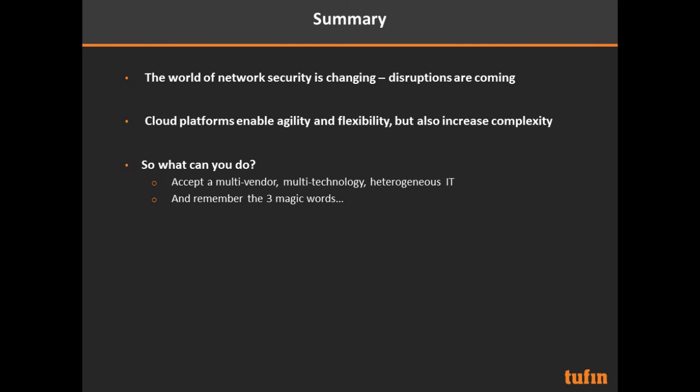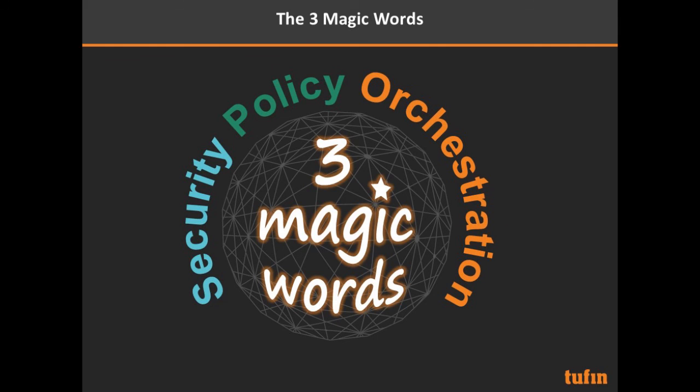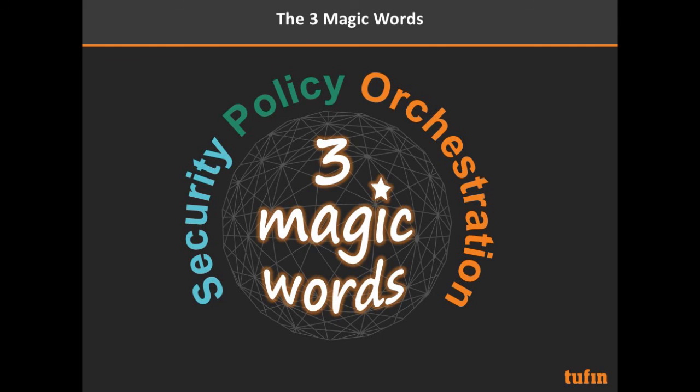In summary, the world of network security is changing very quickly. Cloud platforms enable agility and flexibility but also increase complexity, because you won't simply move wholesale to the cloud and leave your physical on-premise environment. Accept that the world is multi-vendor, heterogeneous, and multi-technology — and remember the three magic words: security policy orchestration. And one more thing: Tufin is integrated with R80, so if you're interested in seeing what we're doing for R80 we have a demo right outside. Thank you very much.